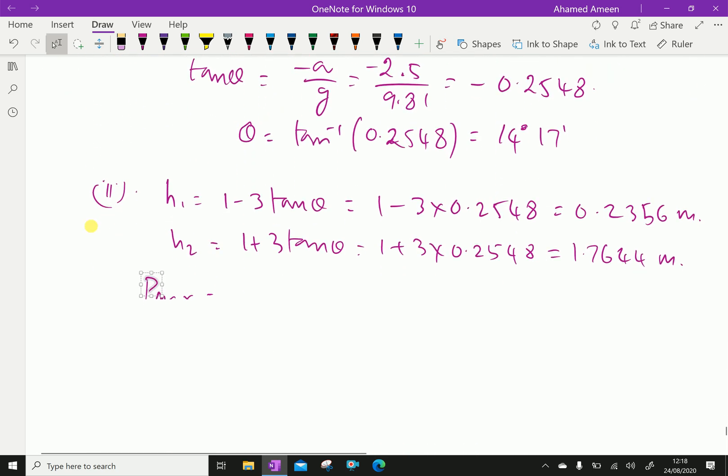P max equals rho g h2. Put h2 as 1.7644. The maximum pressure intensity is 1000 times 9.81 times 1.7644, which by calculation gives 17308.8 Newtons per meter squared.